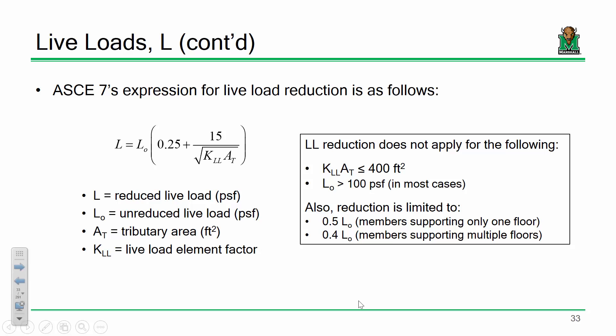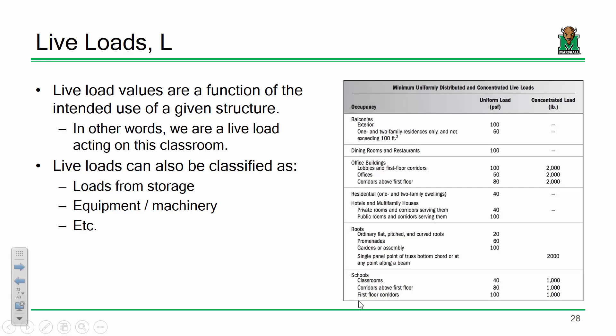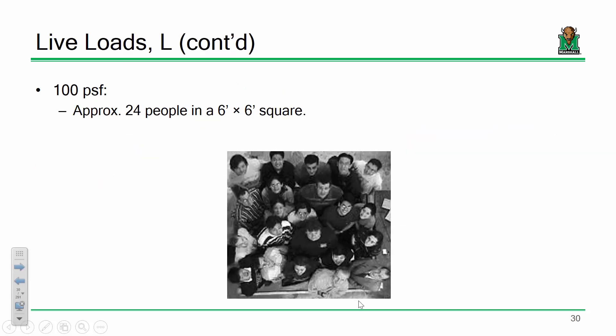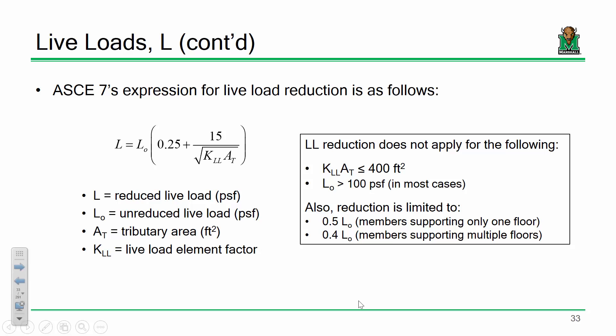What you do is take L-sub-not — the prescribed live load for a given floor system, such as 50 psf for offices — which is your unreduced live load. You multiply it by the quantity in parentheses: 0.25 plus 15 over the square root of KLL times AT. That takes the unreduced live load and reduces it to something you can actually use for calculations. For example, 80 psf might reduce to something like 64 or 65 psf after reduction.